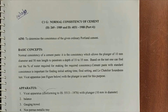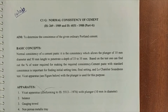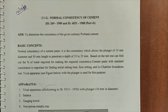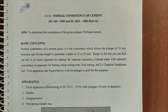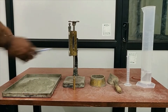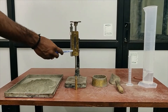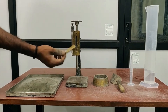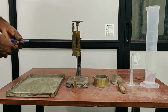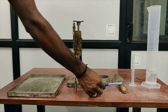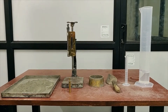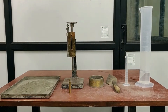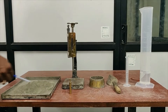Today we are going to see the experimental demo on determining the normal consistency of cement. The apparatus required are: the Vicat apparatus, the Vicat mold, the plunger with 10 mm diameter, a trowel for mixing, measuring jars of 500 ml and 10 ml capacity, and finally the sample for testing.